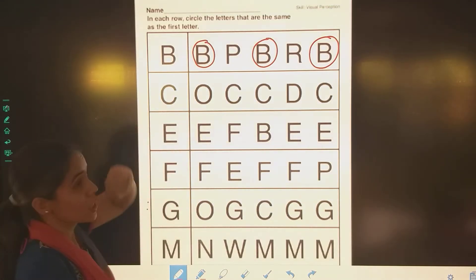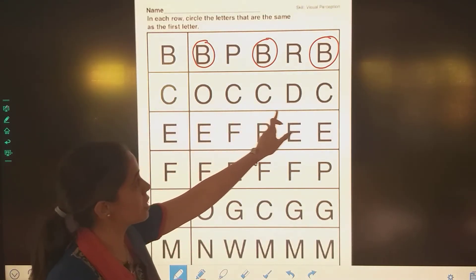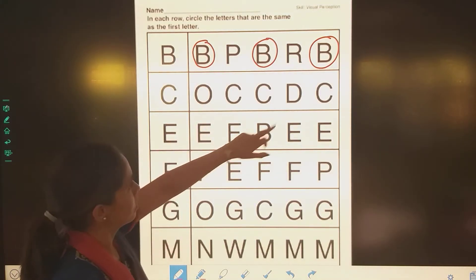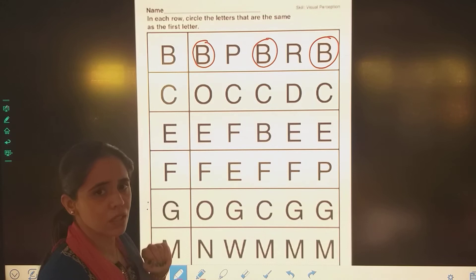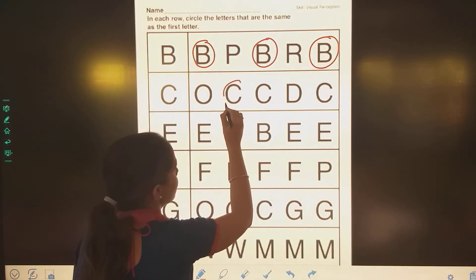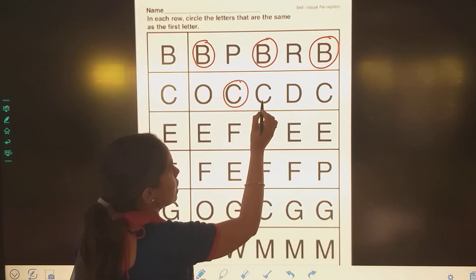Now the next letter is C. Yahaan pe kaha hai C? Baccha batau toh. Yeh C hai? No. Yeh C hai? Nayin. Toh C kaha hai? Batao. Yeh raa C. This is C. Yeh bhi C hai.